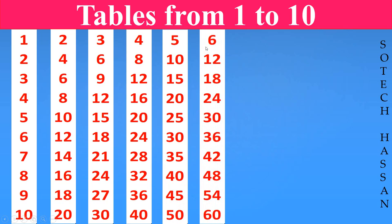6th table. 6 1s are 6. 6 2s are 12. 6 3s are 18. 6 4s are 24. 6 5s are 30.